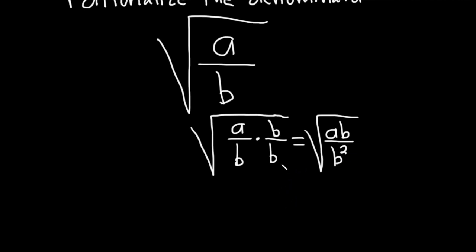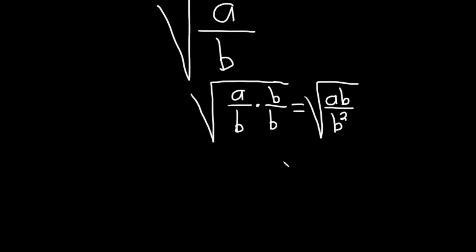And now you can just take the square root of each piece. So this is the square root of a b over the square root of b squared.